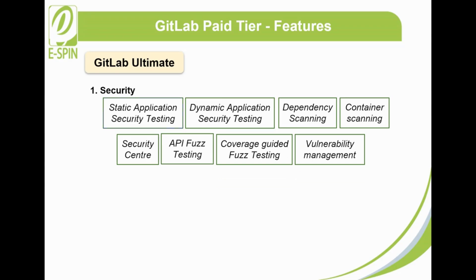Static application security testing evaluates static code and checks for potential security issues. Dynamic application security testing analyzes the review application to identify potential security issues — both automated as part of the pipeline and on-demand. Dependency scanning evaluates third-party dependencies to identify potential security issues. Container scanning analyzes Docker images and checks for potential security issues, offering a suggested solution for the vulnerability when available.